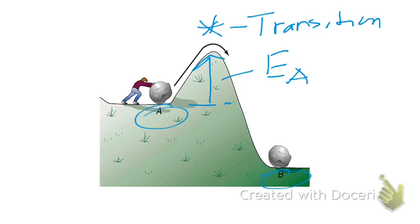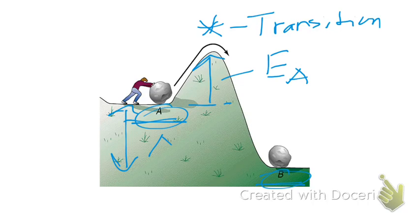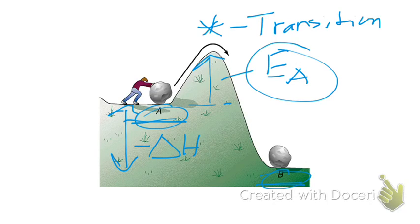As the boulder rolls down the mountain, it loses potential energy. When the boulder is at position A at a high position, it has more potential energy than at the bottom. So there's a change in potential energy going from position A to B. Since we are losing potential energy, we have a negative delta H. But we still need to get the boulder up to the transition state first, applying that initial energy — the activation energy.